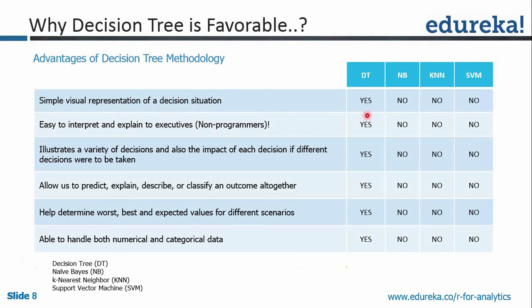The visualization of a decision tree is extremely simple, as you'll see when we execute our code. It's extremely easy to interpret and explain to executives — even non-programmers who don't understand the programming logic can easily interpret things. Decision tree illustrates a variety of decisions and the impact of each decision if different decisions were to be taken. Which decision is going to impact your final outcome to what extent can be easily illustrated using a decision tree.